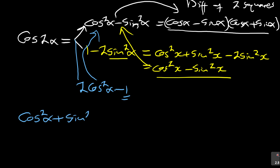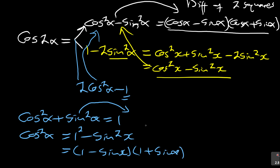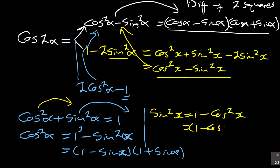Another important identity is cos²α + sin²α = 1. Remember, you can rearrange to get cos²α = 1 − sin²α, which is a difference of two squares: (1 − sin α)(1 + sin α). Similarly, sin²x = 1 − cos²x, which is (1 − cos x)(1 + cos x). So be careful of these trick identities.